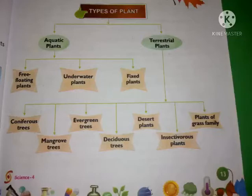What are the types of plants? Aquatic plants and terrestrial plants — these are the 2 main types of plants. Aquatic plants include free floating plants, underwater plants, and fixed plants.